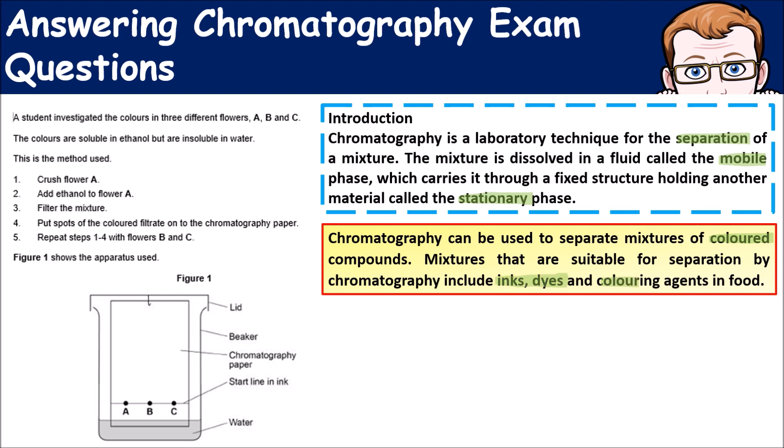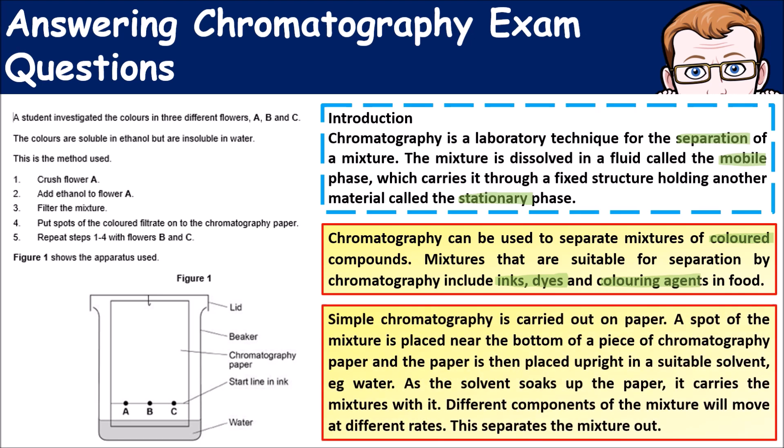Simple chromatography is carried out on chromatography paper. A spot of the mixture is placed near the bottom of the piece of chromatography paper, and the paper is then placed upright in some suitable solvent, like water.